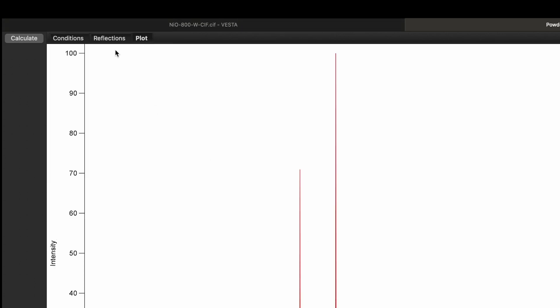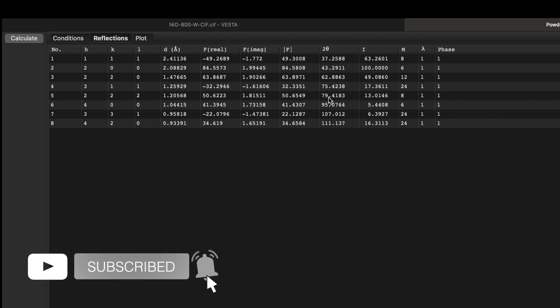It will generate a reflection list as well as a plot. Over here you can see a reflection list. You can find the 2θ values like 37.2, 43, and for these corresponding 2θ values you can also find the hkl planes: 111, 200.